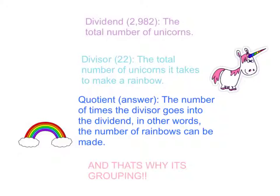The quotient, the answer, is the number of times the divisor goes into the dividend. In other words, the number of rainbows that can be made.